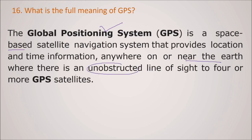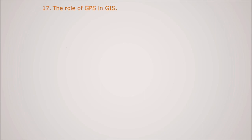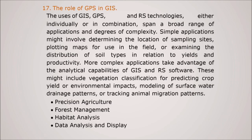What is the role of GPS in GIS? The uses of GIS, GPS and remote sensing technologies may be individually or in combination span a broad range of applications and degrees of complexity. Simple applications might involve determining the location of sampling sites, plotting maps for use in the field or examining the distribution of soil types in relation to yields and productivity. But we have more complex applications also like taking advantage of analytical capabilities of GIS and remote sensing software. This might include vegetation classification for protecting crop yield, environmental impacts, modeling of surface water drainage patterns, or tracking animal migration patterns. Precision agriculture, forest management, habitat analysis, data analysis and display all are there.